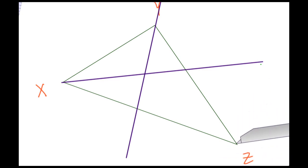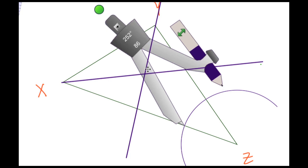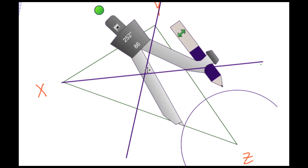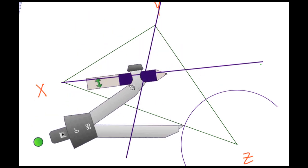Again, the pointy end on Z. Let's draw our first arc. There it is, crossing two sides of the triangle. Not changing the radius of the compass, let's place it at one of those intersections and draw another arc.